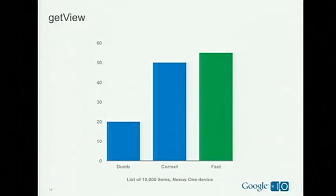Here's a performance comparison using Froyo on Nexus One with a list of 10,000 items, each a LinearLayout containing an image and a TextView. With the naive getView: about 20 frames per second. When implementing getView correctly by reusing ConvertView: up to 50 fps. With the ViewHolder pattern: up to 55 fps. The maximum on Nexus One is 60 fps. When you account for the overhead of redrawing the view hierarchy, issuing commands, binding views, and reading bitmaps, 55 fps is pretty much as fast as you can go inside an adapter.